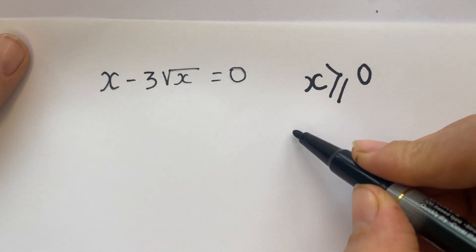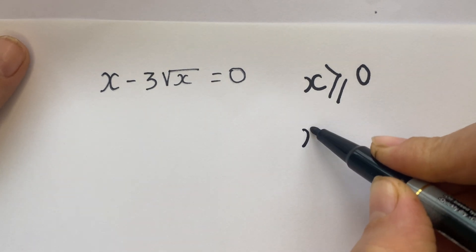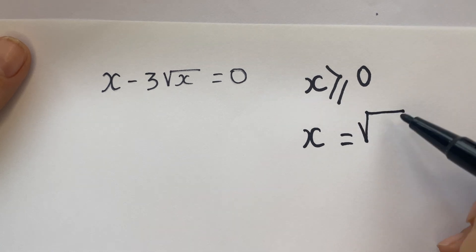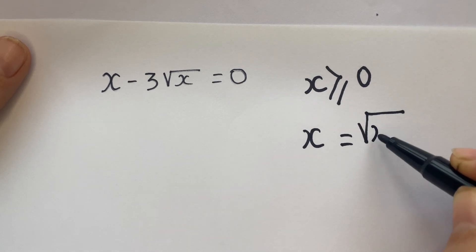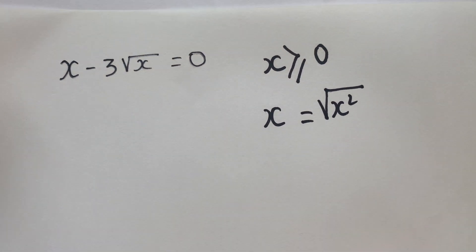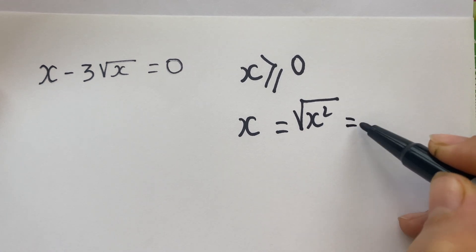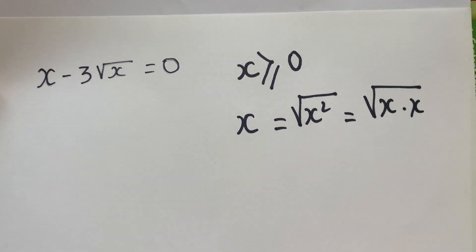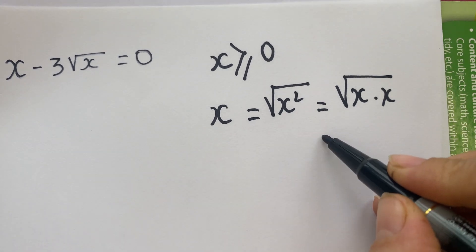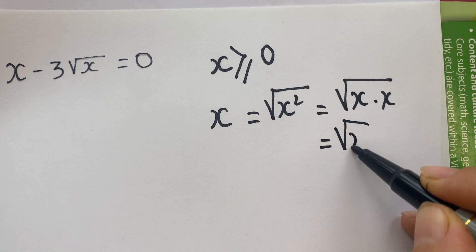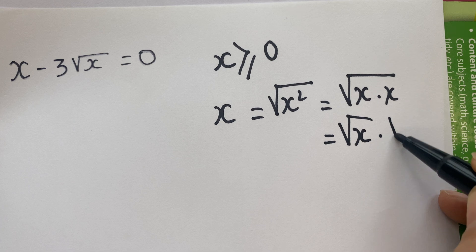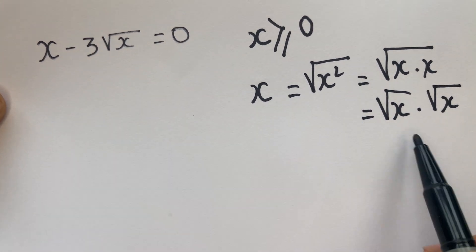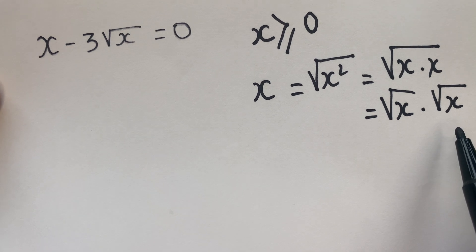Therefore, we have x equals square root of x squared, which equals square root of x times x, which equals square root of x times square root of x.